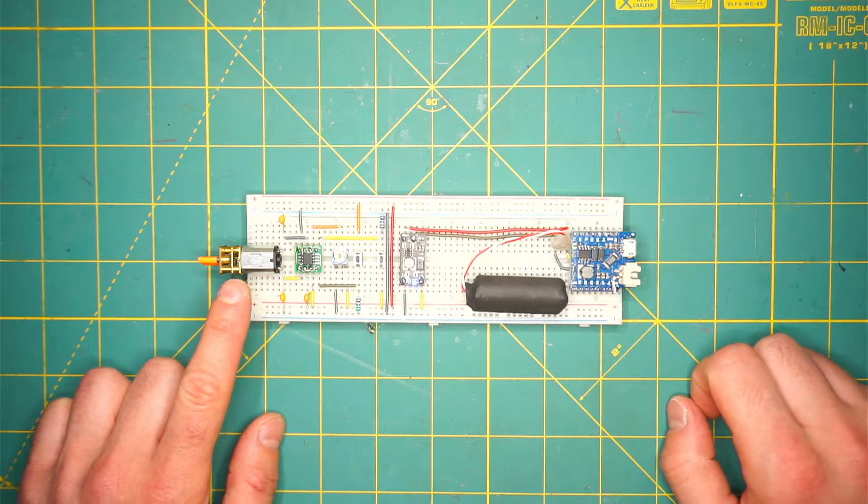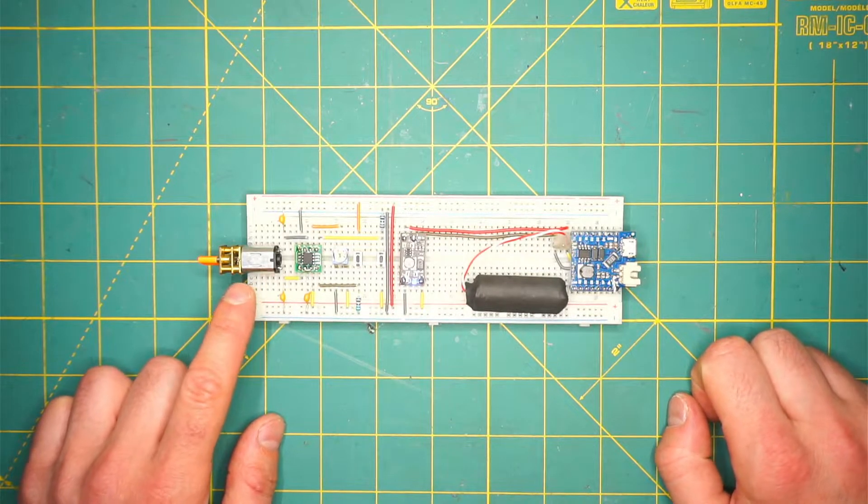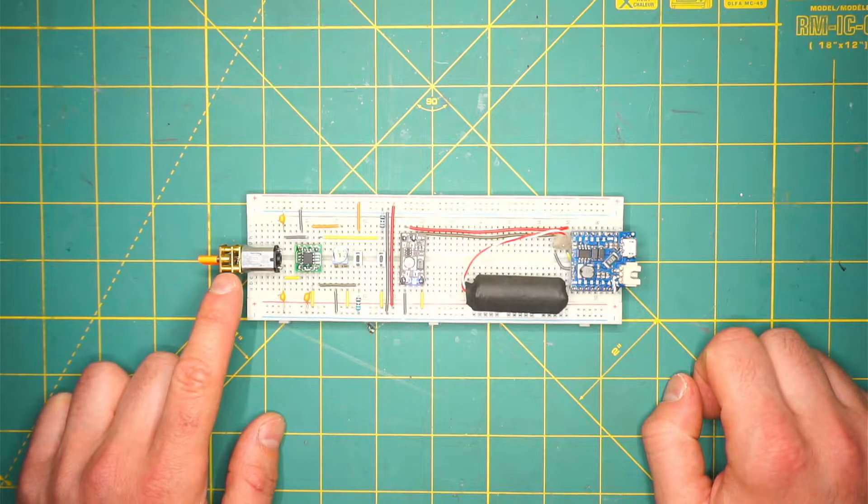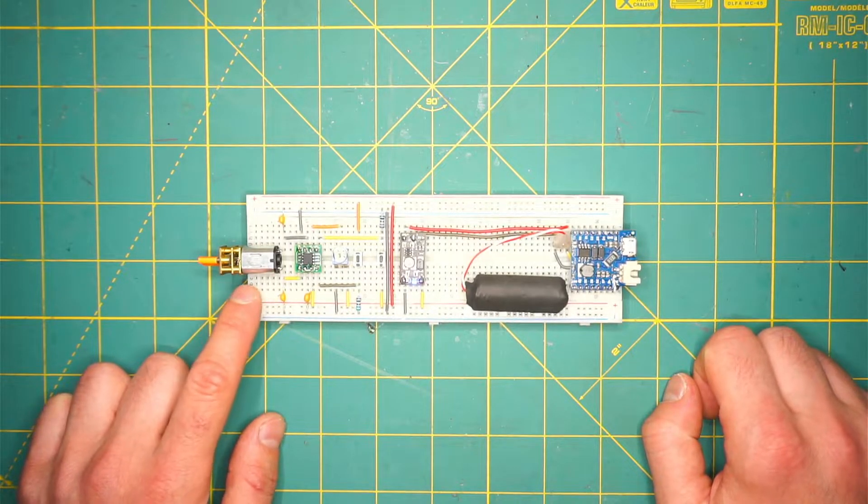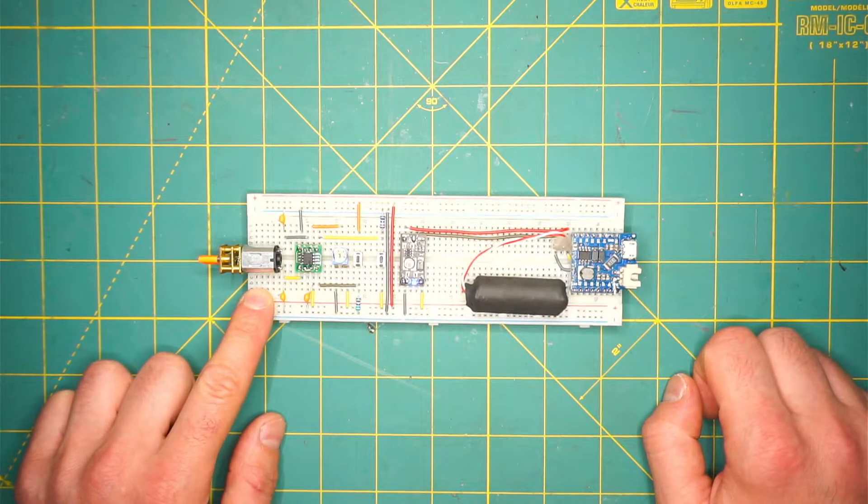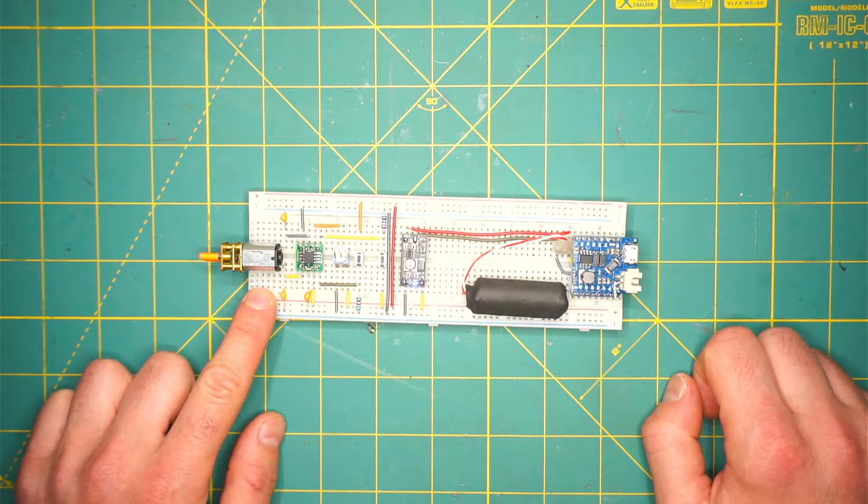I have chosen a 6V 100RPM motor with a gearbox. It's very important to get a geared motor because we need the torque to have the power to unscrew and screw the bolts.